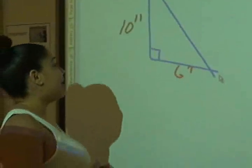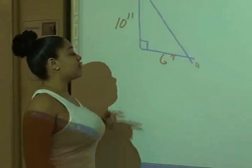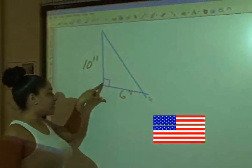How you doing? Here we have a right triangle. You know that it's a right triangle due to the little square in the corner.